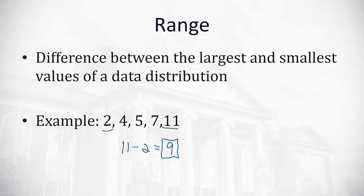The problem with the range is it's dependent just on two data values. And if there's an outlier, a value far removed from the rest of the data, the range can become severely skewed.